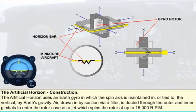The artificial horizon uses an earth gyro in which the spin axis is maintained in — or tied to — the vertical by Earth's gravity. This means that the plane of the rotor rotation is horizontal, thus providing the stable lateral and longitudinal references required.